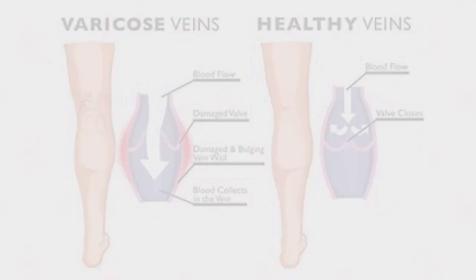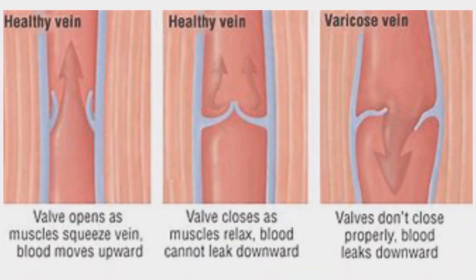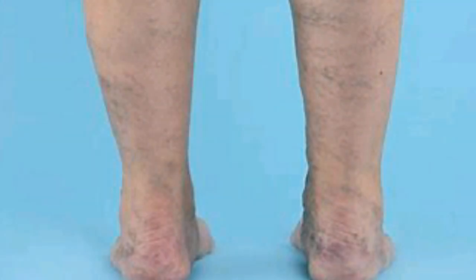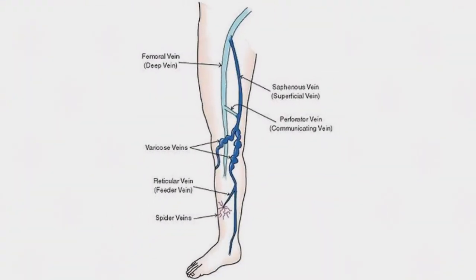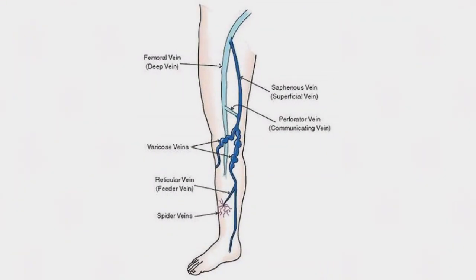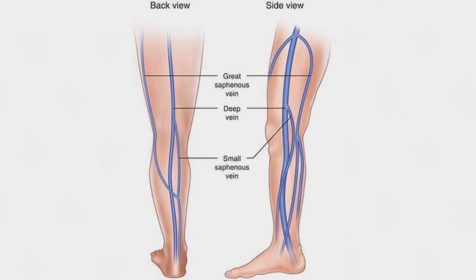Varicose veins are characterized by tortuous and dilated veins. They are found uncomfortably visible at any region of the body, but most commonly behind the legs. The superficial veins of the legs are more prone to become varicose because they lie more superficial to the muscles. They are also more likely to occur in the great and short saphenous veins.